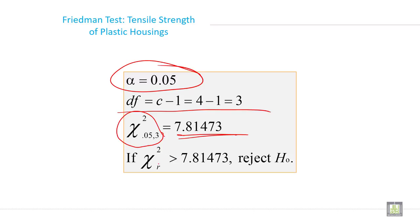So if chi-square calculated is greater than 7.81473, then reject the null hypothesis. This will be your decision rule.